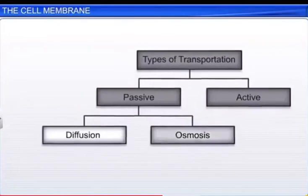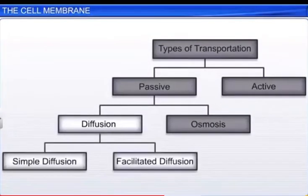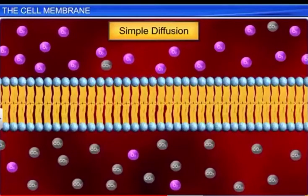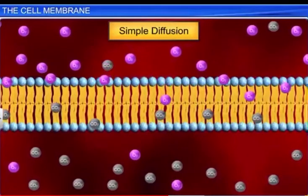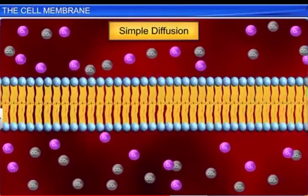In a cell membrane, we observe simple diffusion and facilitated diffusion. In simple diffusion, oxygen and carbon dioxide molecules freely move across the membrane from higher to lower concentration.